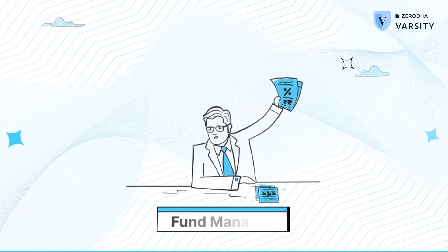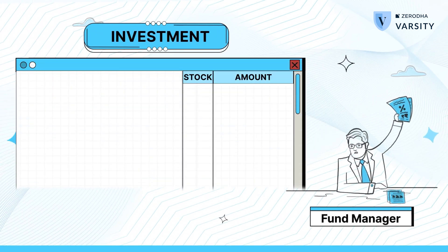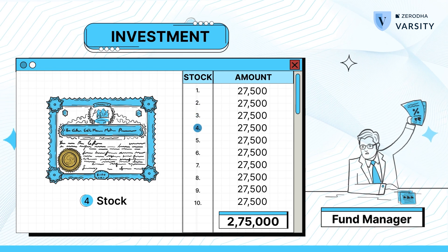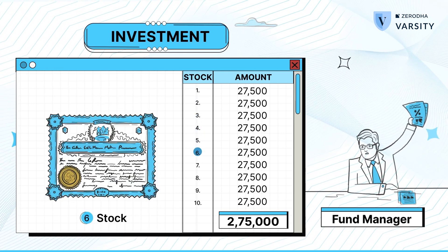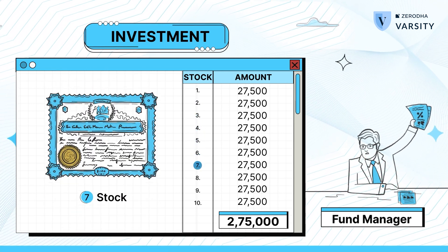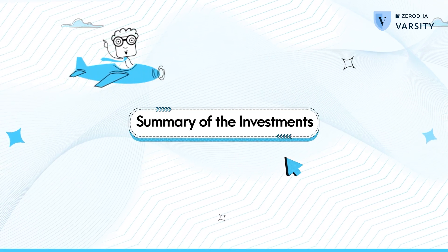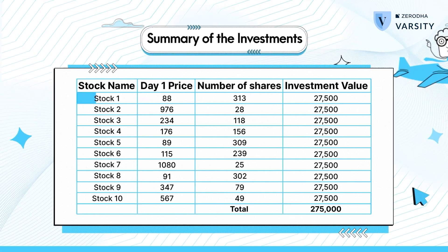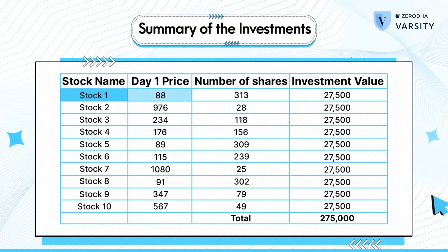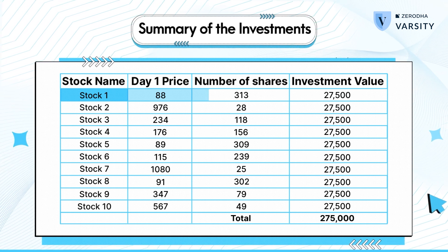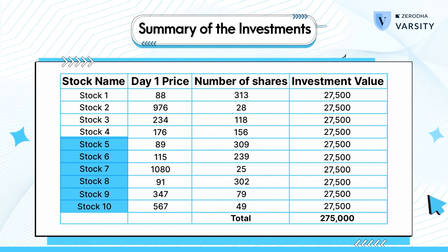Now that the fund manager has 2.75 lakhs, the funds have to be invested in the stock market. Assume that the fund manager decides to invest in 10 stocks in equal proportion — basically the investment in each stock is 27,500. While each stock trades at a different price, the amount invested will remain the same. Here is how the table looks. For example, stock 1 is trading at 88 rupees per share, so 27,500 divided by 88 gives 313 shares. Likewise for all the other stocks.